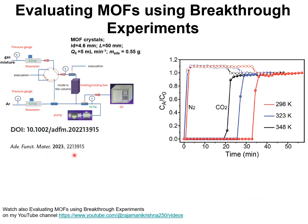This paper in Advanced Functional Materials 2023 also presents experimental data on the breakthroughs for 15/85 mixtures of carbon dioxide and nitrogen at three different temperatures: 298 K, 323 K, and 348 K. These experiments were conducted in a tube with an inside diameter of 4.6 mm, a packed length of 50 mm, with an inlet gas flow rate of 5 ml per minute, and a mass of adsorbent of 0.55 grams.